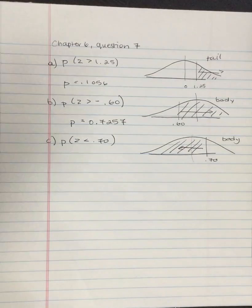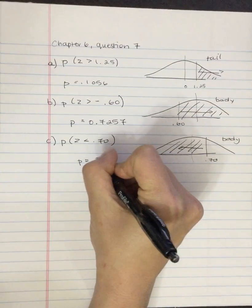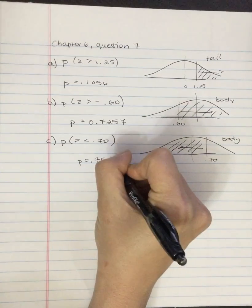Here again, we're looking for the body. The body, the probability here, column B, is 0.7580.